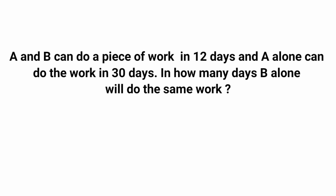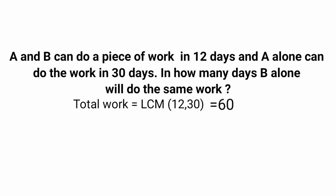Next question: A and B can do a piece of work in 12 days, and A alone can do the work in 30 days. In how many days will B alone do the same work? The first step is to take the LCM of 12 and 30. Take the larger number 30 — it is not divisible by 12. Take the next multiple: 60. Since 60 is completely divisible by 12, the LCM is 60, so the total work to be completed is 60.